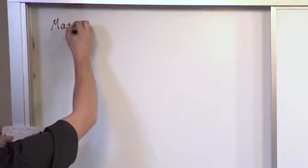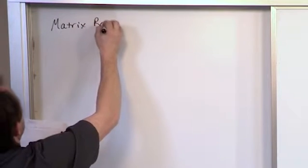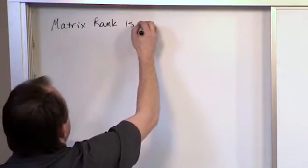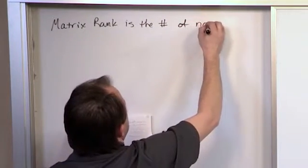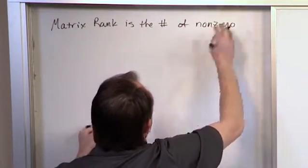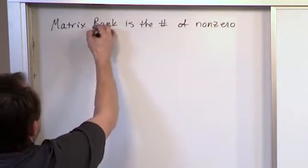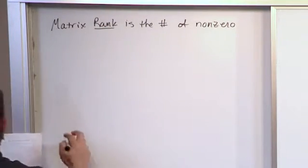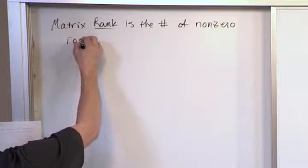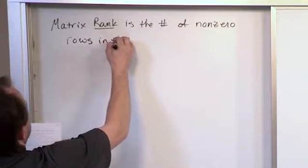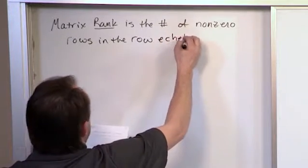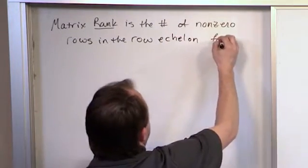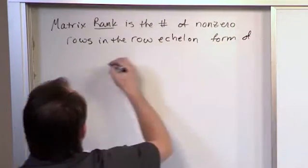Matrix rank is the number of non-zero... And this is probably not a definition you'll see in your book exactly like this. I'm kind of boiling it down for you. It's the number of non-zero rows in the row echelon form of the matrix.